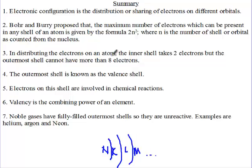In distributing electrons on an atom, the inner shell can take 2 electrons, but the outer shell cannot have more than 8 electrons. So once you get 8 electrons, a new shell is added, and you put the remainder of the electrons there. Once you get a further 8, a new shell is also added.